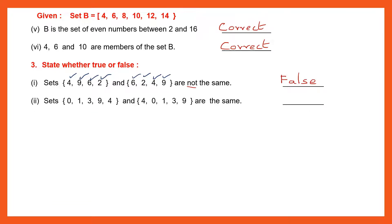Second one: Sets {0, 1, 3, 9, 4} and {4, 0, 1, 3, 9} are the same. If they have the same elements, they are the same — the order does not matter. 0, 1, 3, 9, 4 — all elements match. They have the same elements, so the sets are the same and the statement is true.